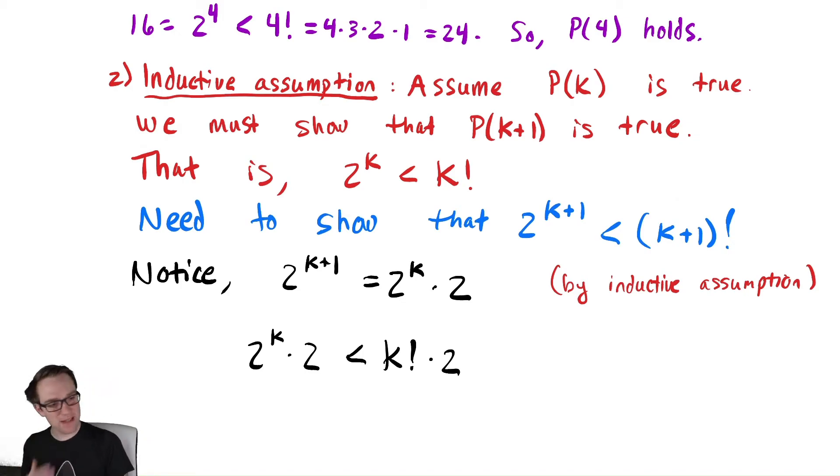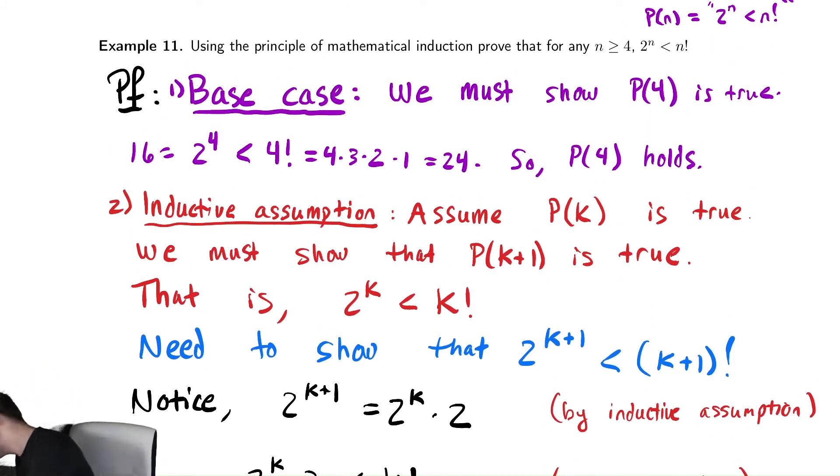And now we need to try to make that look like (k+1) factorial. So it'd be really convenient if I could get rid of that 2 somehow and make it more convenient. What I want to do is I would really like to replace 2 with k+1, because if I replace it with k+1, I can actually rearrange that into (k+1) factorial. Is that true? Well, this requires that k is greater than 1. If I just do algebra, right, that's 2 less than k+1. I subtract 1 from both sides, that says k needs to be greater than 1. Is that the case? Yes.